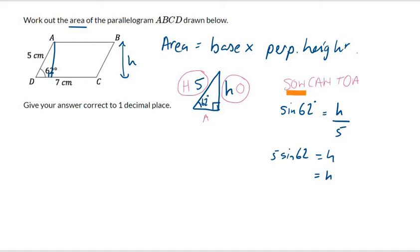And then we simply type it on the calculator. And I'll get 4.415. I'm keeping lots of decimal places so I don't get rounding error. And finally, we can answer the question. So the area is going to be 7 times 4.415, which will give us 30.9 centimeters squared.